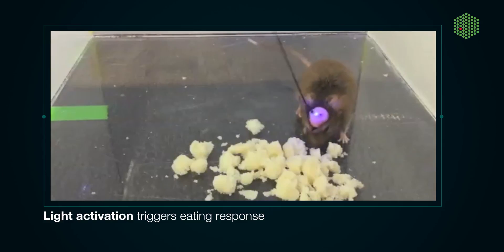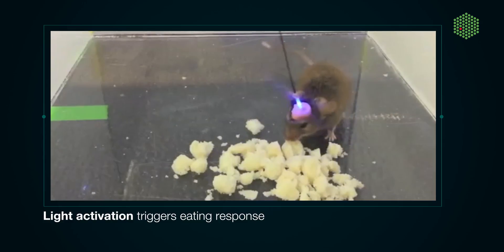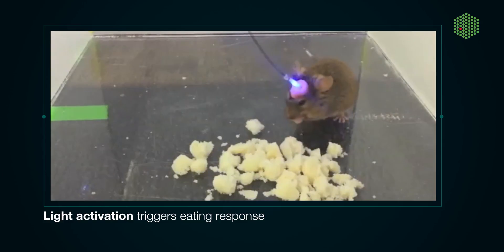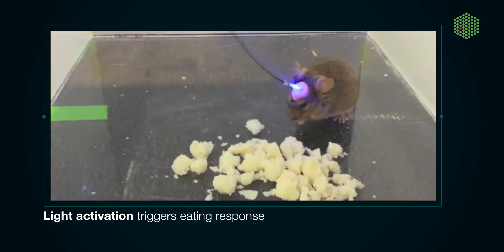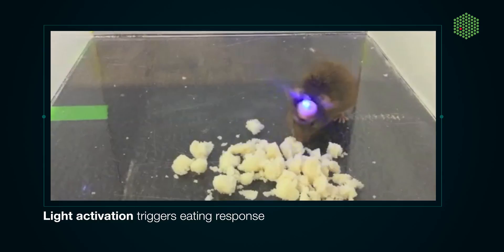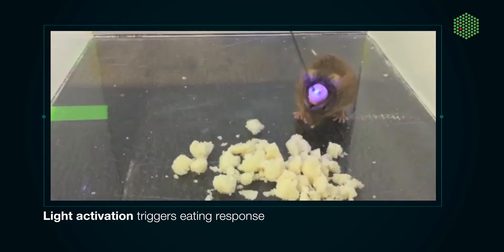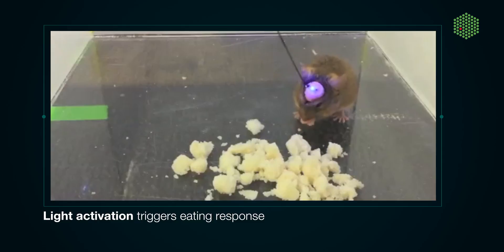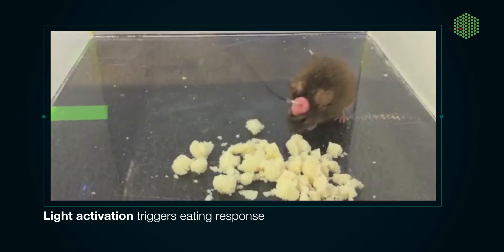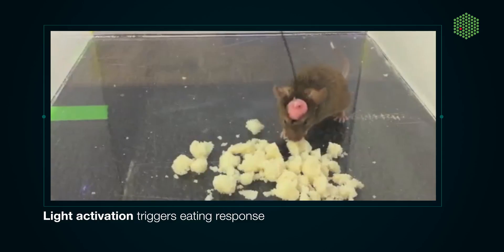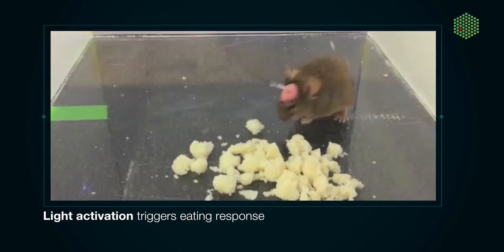Optogenetics was developed by a group of neuroscientists when they used this technique to control neuronal activity with light. But it is only recently, thanks to a new photosensitive module, that optogenetics can be used in living organisms to control cell activity, for example during embryonic development.